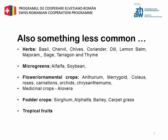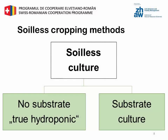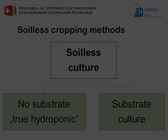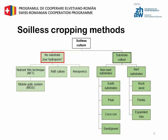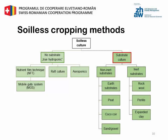In most cases these crops are started hydroponically and when the seedlings reach their desired size they are transplanted to the fields. We know different soilless cropping methods: culture without a substrate, so-called true hydroponic, which is divided into nutrient film technique, raft culture, and aeroponics; and the substrate culture, which can be divided into non-inert substrates and inert substrates.